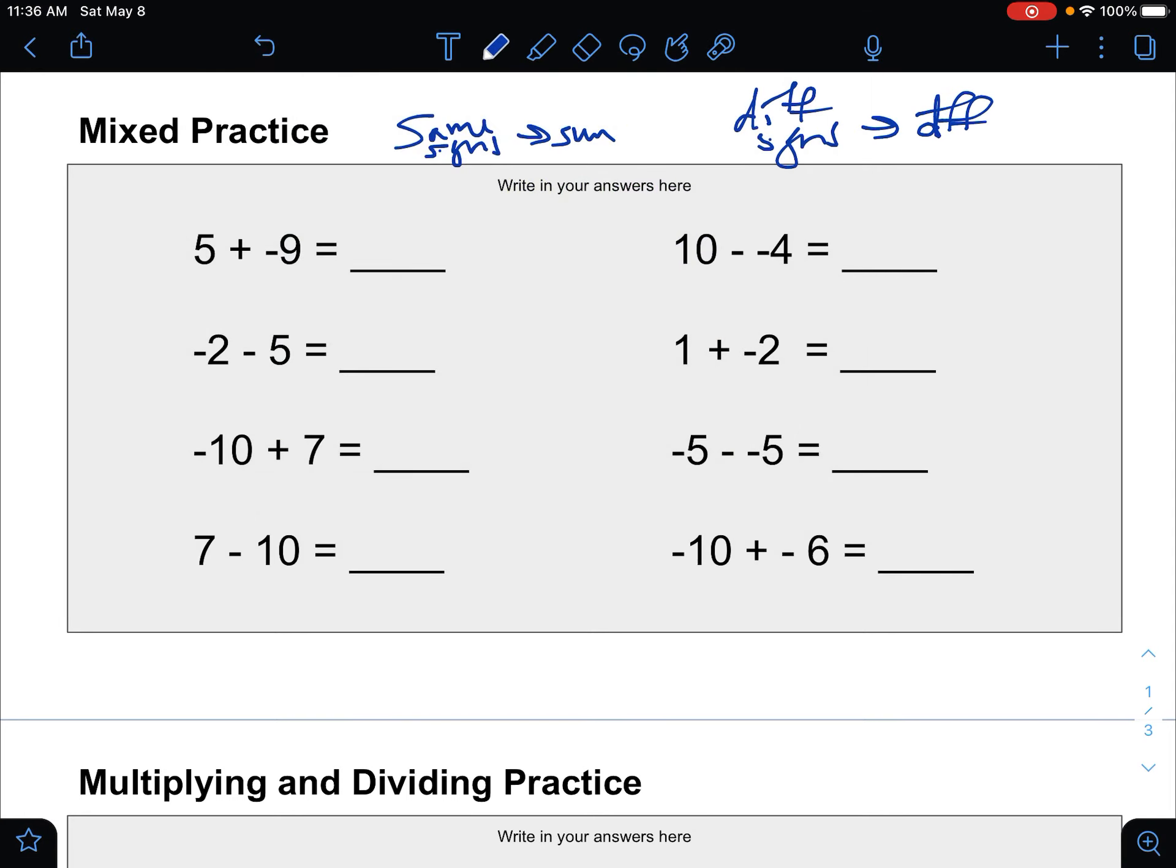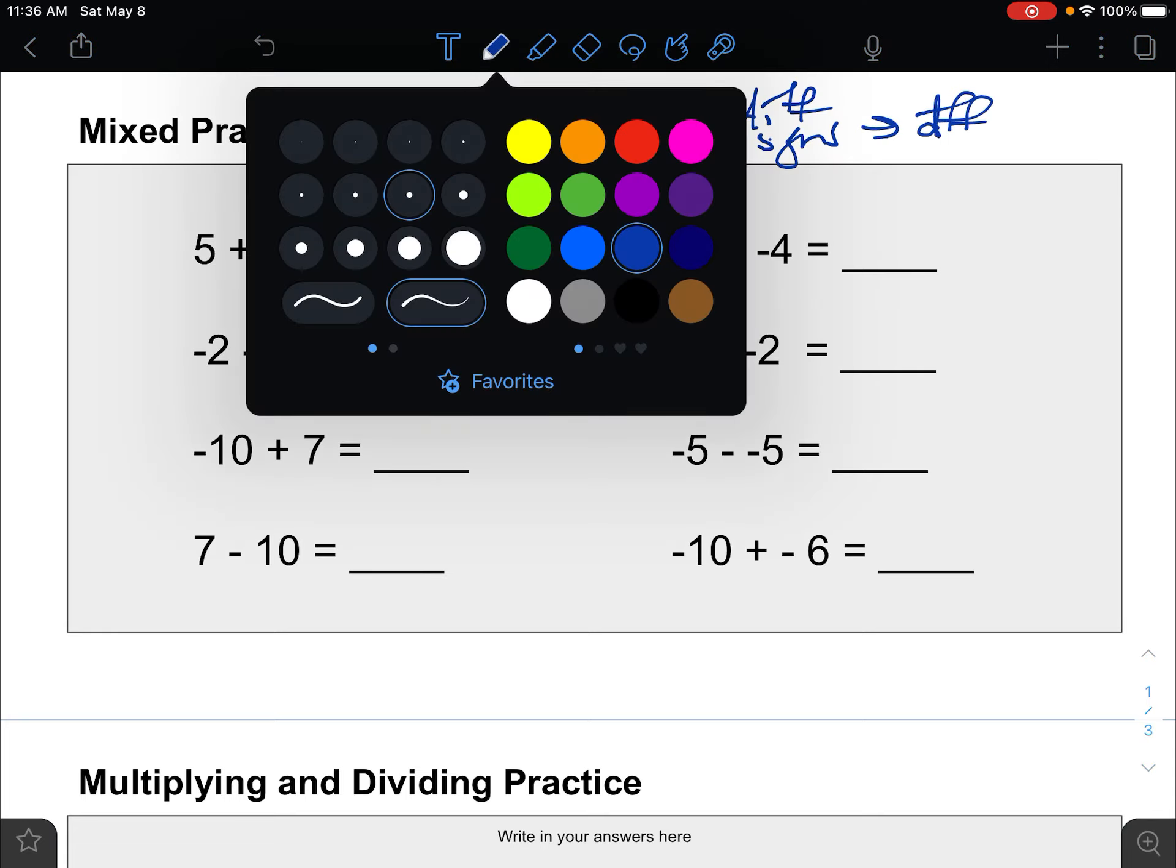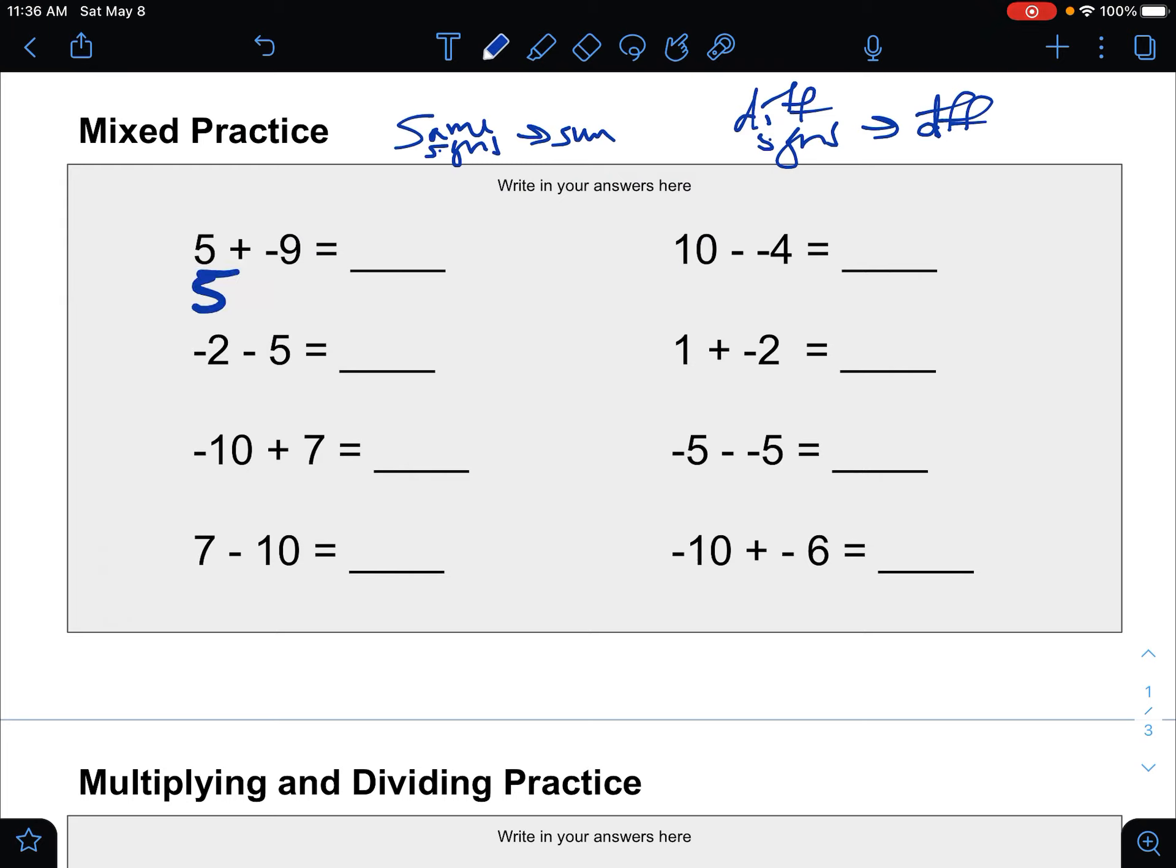So for the first one here, 5 plus negative 9. First thing I would do is think of that as 5 and minus 9. These have different signs, one's positive, one's negative. So we're going to find the difference between 5 and 9, which would be 4. And then which one has more? The negatives have more, so it's negative 4, because the negatives have 4 more than the positives do.